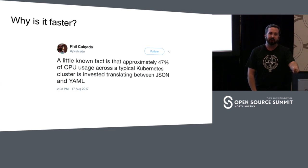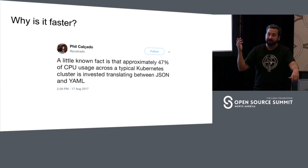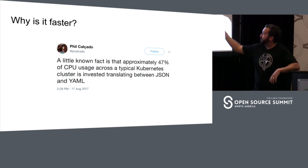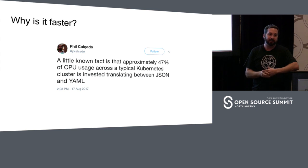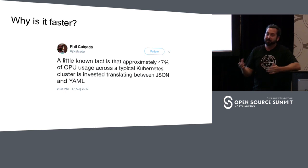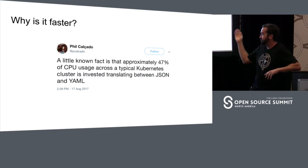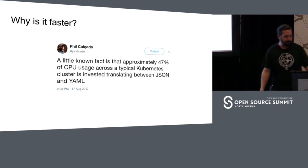A more practical example: looking at a Kubernetes cluster, it's been said that about 47% of the CPU usage is based on translating text to have different things communicate with each other. Kubernetes doesn't use gRPC internally for everything right now — some of it is based on Swagger and other API stuff — but 47% is a pretty cool example of why we probably don't want to keep doing that.